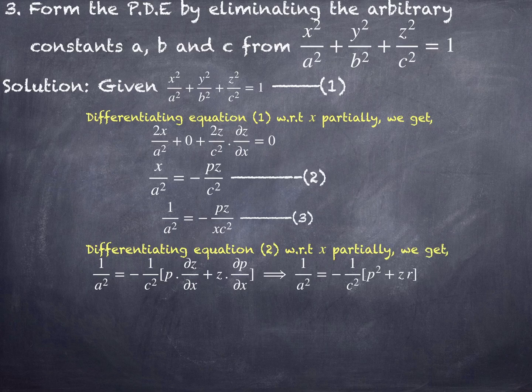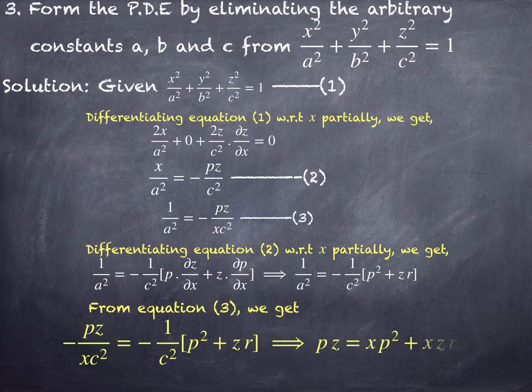Substituting from equation number 3 — in place of 1/a², substitute −pz/(xc²). The c² terms cancel, and we arrive at the final solution: pz equals xp² plus xzr, which is the required PDE.